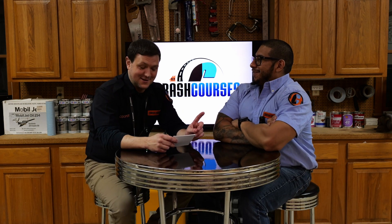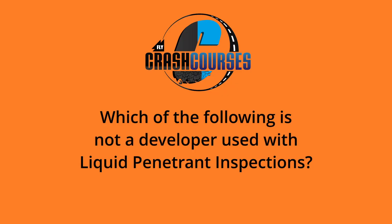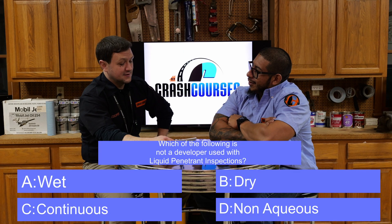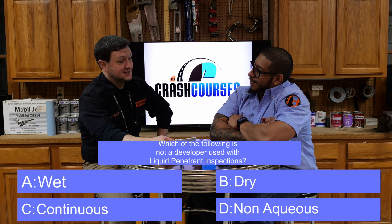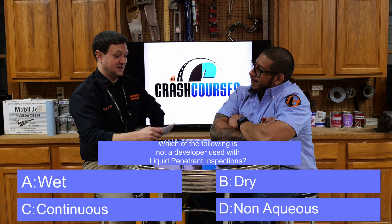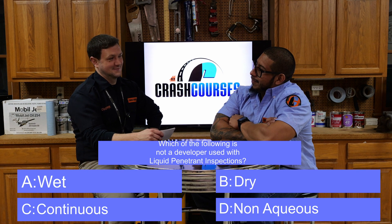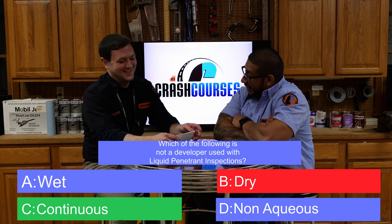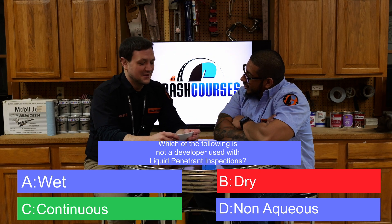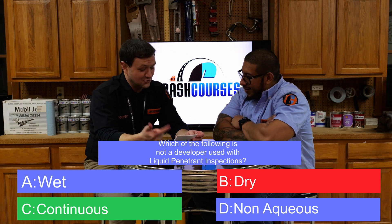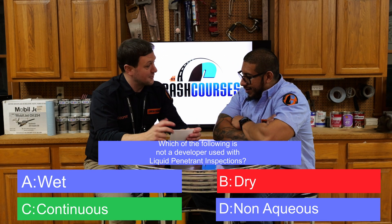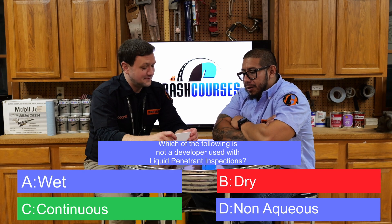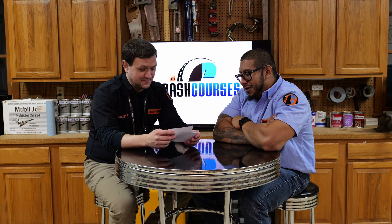Last question: which of the following is not a developer used with a liquid penetrant inspection? A) wet, B) dry, C) continuous, or D) non-aqueous? The answer is C — continuous. The three developers used with liquid penetrant inspection are wet, dry, and non-aqueous.